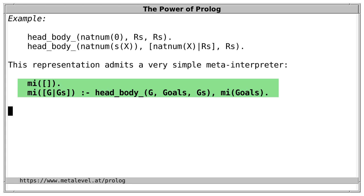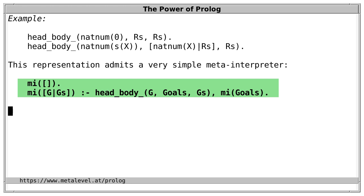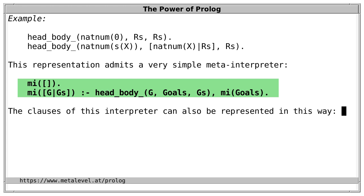This is one major takeaway: we can write a Prolog meta-interpreter with just two clauses in two lines of code. It works like the previous one, yielding 0, 1, 2, 3 and so on for our sample program.